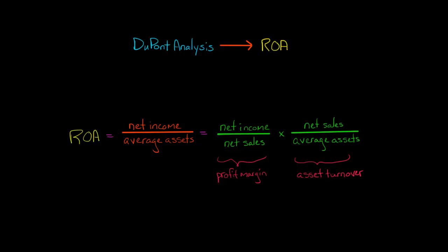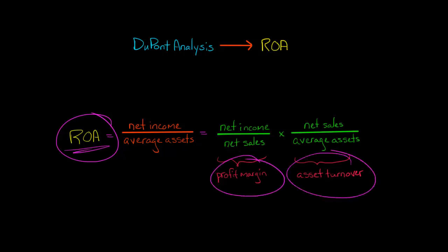But we can go a step further. We can break ROA into two component parts. ROA is the product of a company's profit margin and its asset turnover. Profit margin tells us how good a job a company is doing at managing its expenses, and asset turnover tells us how good a job the company is doing generating sales given the assets it has at its disposal.